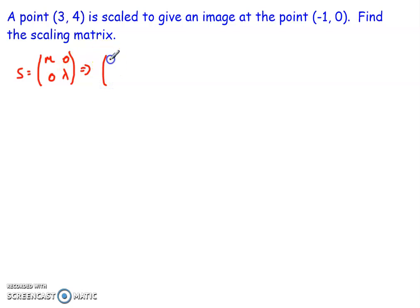So what that means is for this one essentially I've taken μ, 0, 0, λ and I've multiplied it by my column matrix (3, 4) of that coordinate, and that's given me (-1, 0). So I can use this to set up equations for μ and λ to solve. If I was to do my matrix multiplication for here, what I'd end up getting is that 3μ is equal to -1, 4λ is equal to 0, and from that I can say that μ is equal to -1/3 and λ is equal to 0.